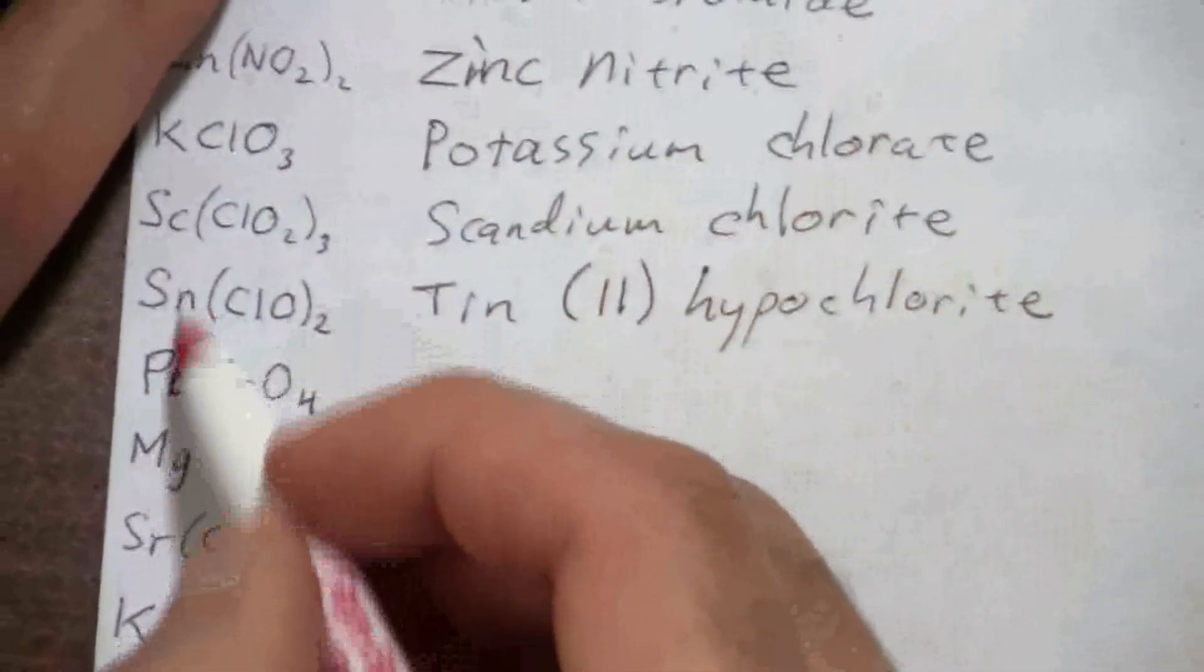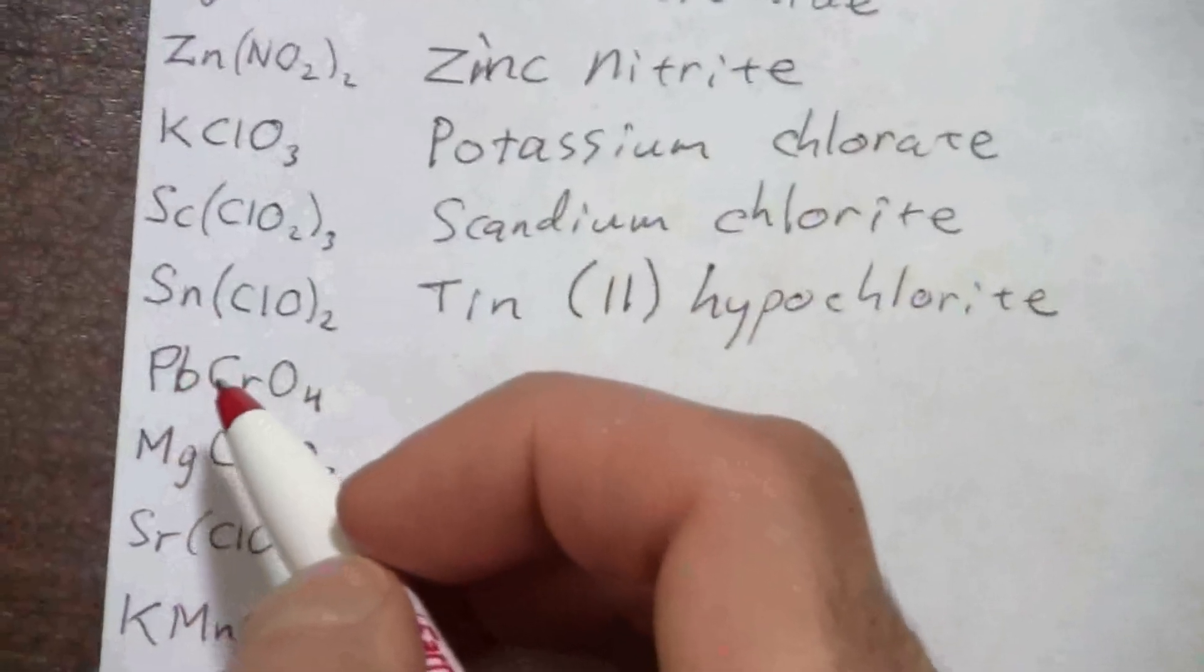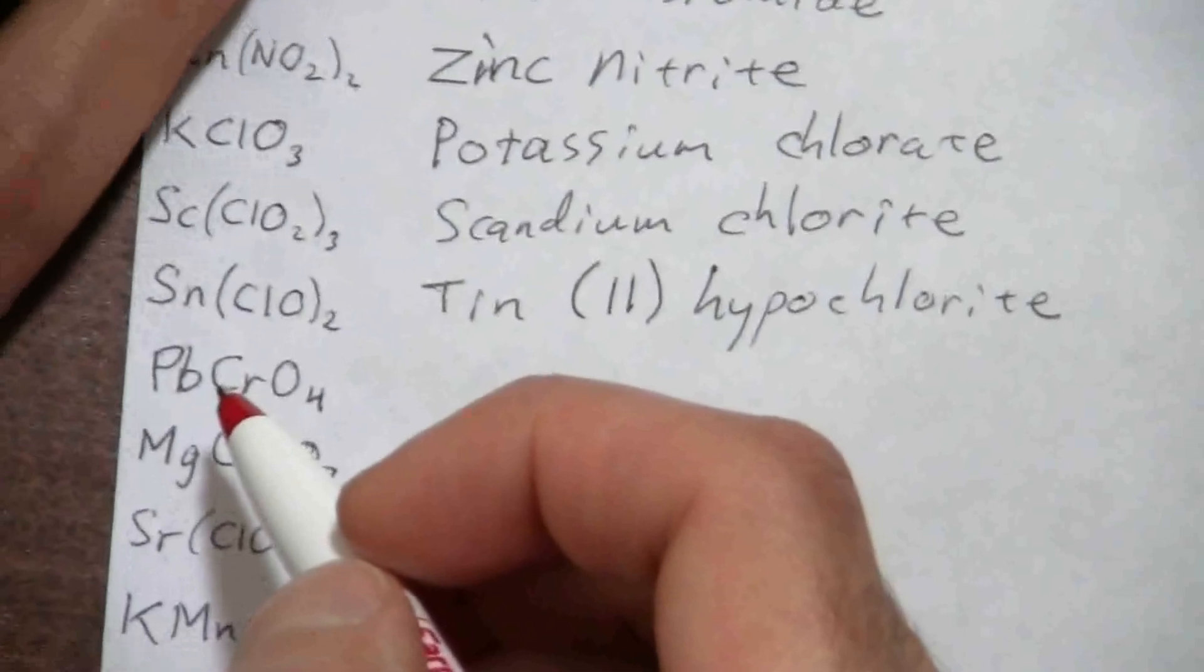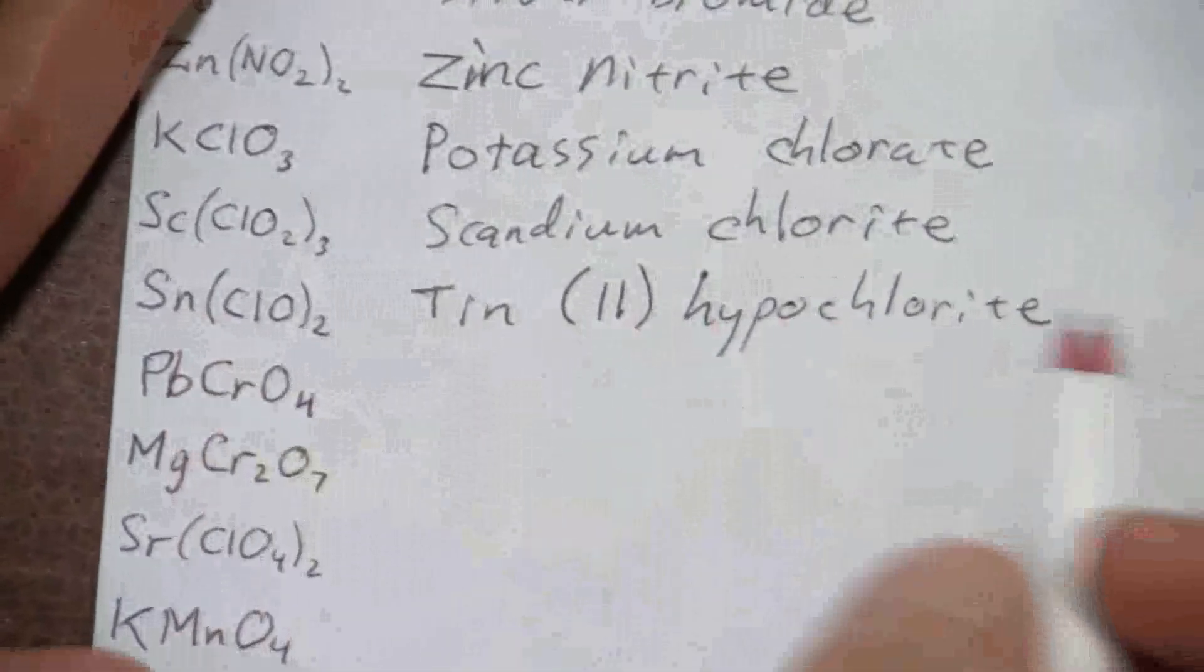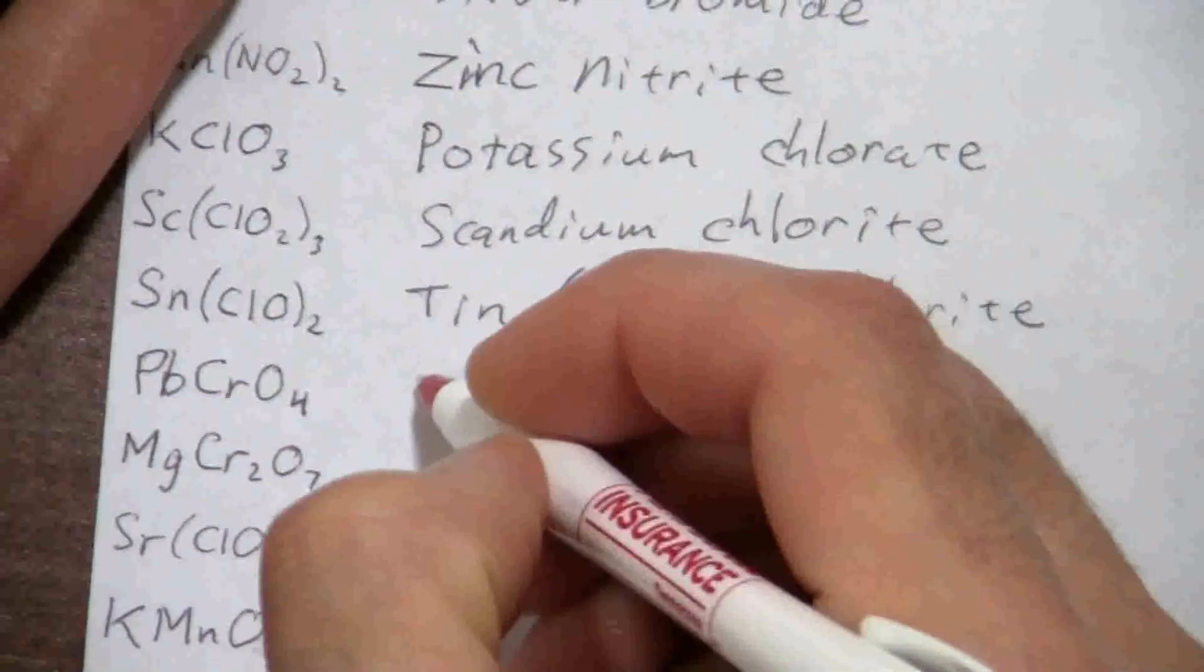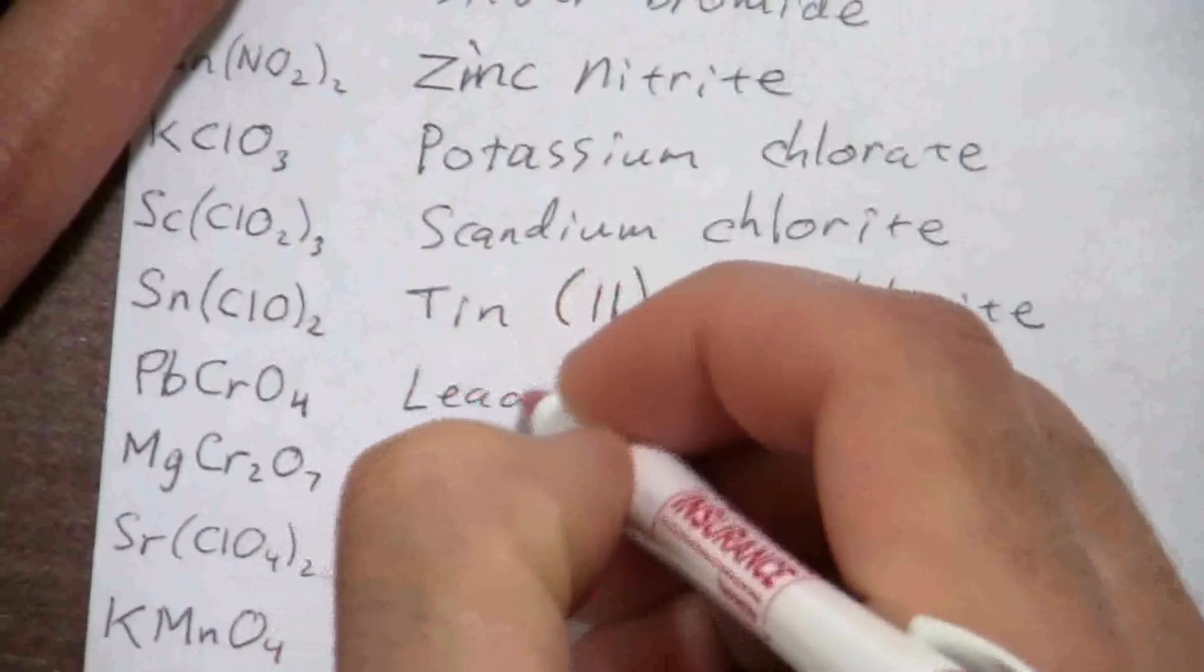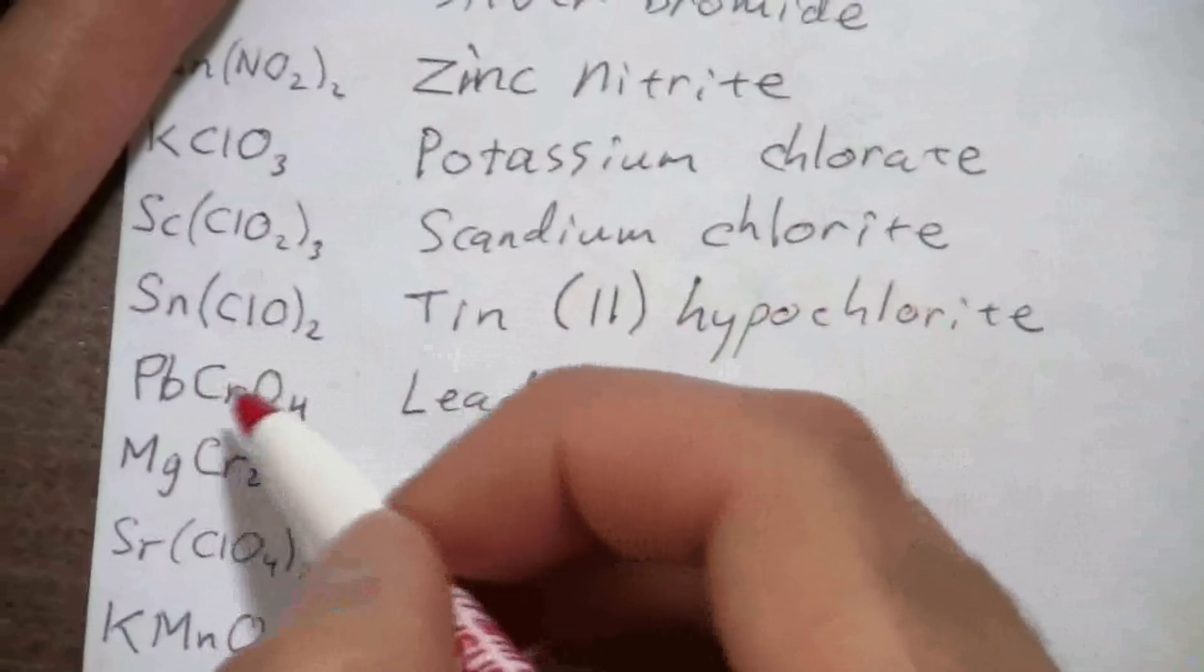Okay, here lead, also like tin, though it is not among the transition metals, it's actually just below tin, it also has a variable charge, and so we need to write that.